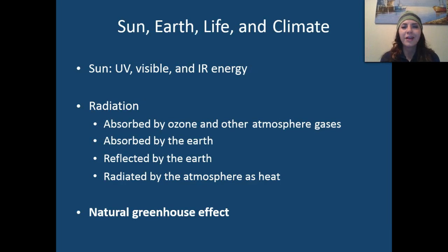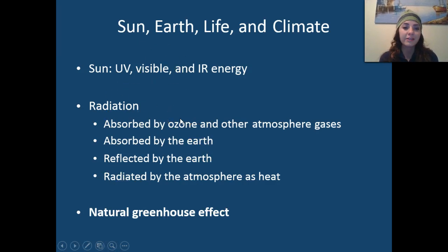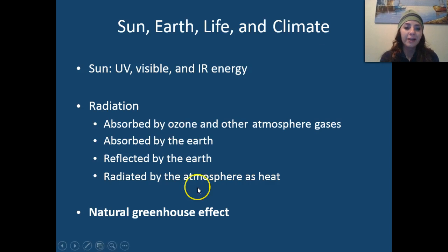Our sun is responsible for all types of radiation, visible and non-visible. For example, radiation on Earth can be absorbed by the ozone and other atmospheric gases. It can be absorbed and reflected by the Earth, and it's radiated by the atmosphere's heat. So we have a lot of exchange of radiation.